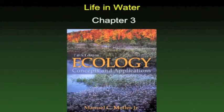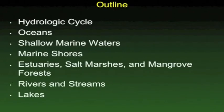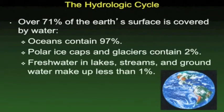Welcome to Chapter 3. This is our third chapter for the first week of Ecology. For this chapter, we're looking at life in the water — the water cycle, oceans, rivers, and lakes. In Chapter 2, we talked about land organisms and biomes. But in this chapter, we're really focused on that part of the earth covered with water, which is the majority of the planet — 71% of the earth is actually covered by water.